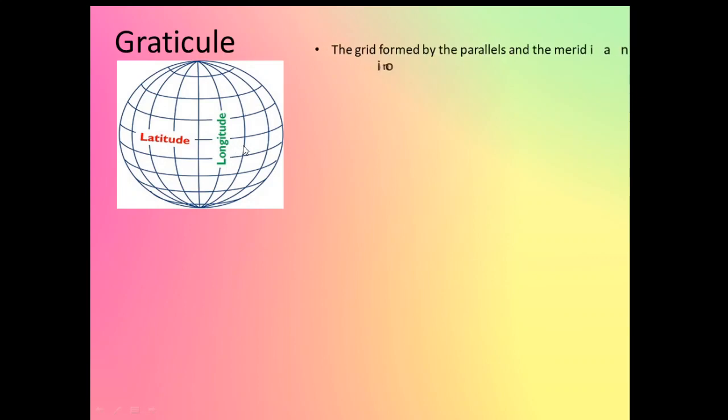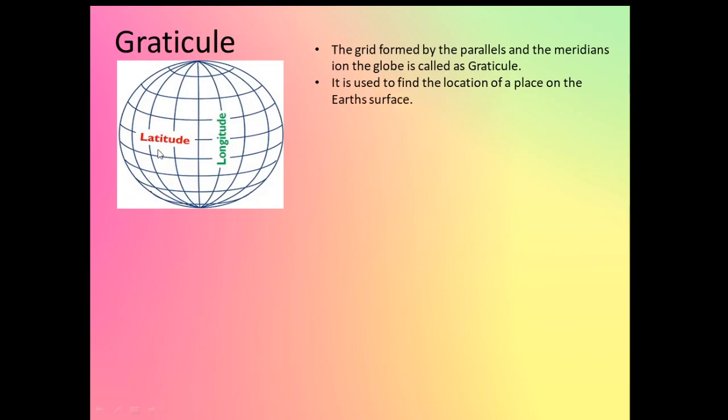Coming to the last topic of the lesson, that is Graticule. Now we have learnt longitude and latitude. When I join both these lines together on a globe, I get a grid view — grid view like these boxes. This grid view is nothing but Graticule. The grid formed by the parallels and meridians on the globe is called Graticule. This Graticule is used to find the location of a place on the earth's surface — if you want to find any place located at any part of the earth, you will find it with the help of Graticule.